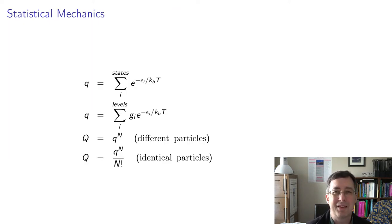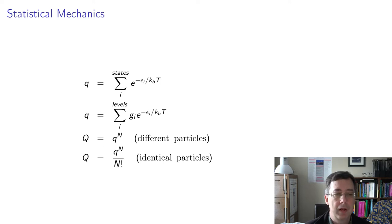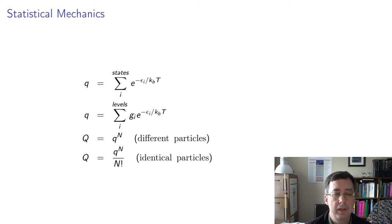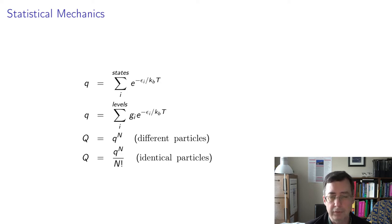I can't really explain all of statistical mechanics in a quick lecture, but let me introduce a few concepts. We create what's called a partition function — for a molecule we might call that little q — and it's just a sum over all the possible states of that molecule. For each state, we use a Boltzmann factor: e to the minus epsilon_i divided by k_B T, where epsilon_i is the energy of that state, k_B is the Boltzmann constant, and T is the temperature in Kelvin. That sum is the molecular partition function.